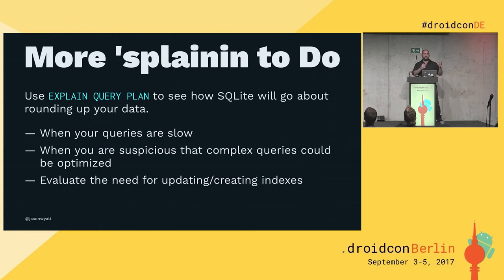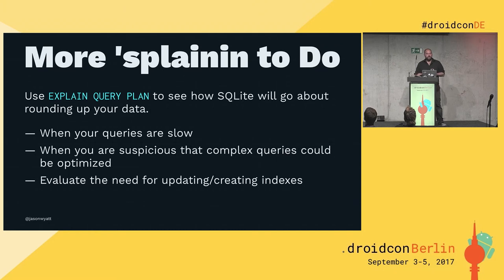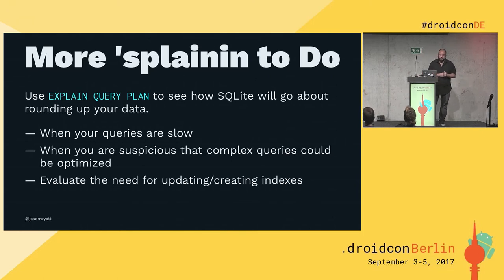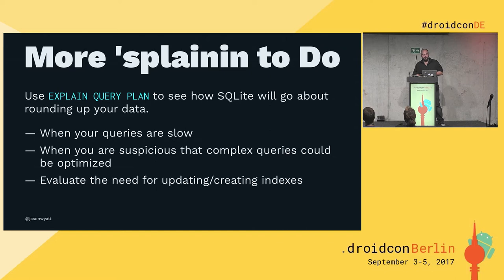Between when SQLite parses your SQL and actually generates that bytecode, it uses a set of advanced algorithms called a query planner to figure out the most optimal way of executing the statement given the current schema you've got in the database. There's some valuable information you can get from SQLite about that query planning if you use EXPLAIN QUERY PLAN in front of your query. You should consider using it whenever your queries are slow, when you're suspicious you might have a bunch of joins, and when you're thinking about whether creating a new index might help.